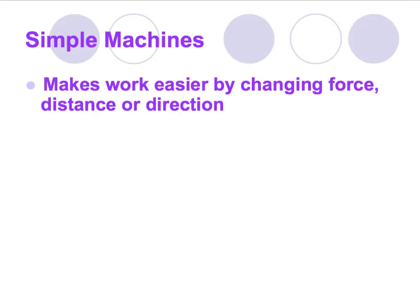The definition of a simple machine is that it makes work easier by doing one of three things: it changes the force, the distance over which you apply force, or the direction of the force. We took notes on this in class today and discussed several examples, so if you're confused, look back at those notes on page 56.